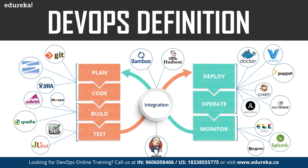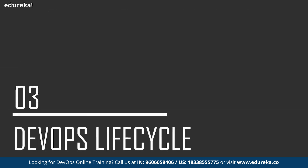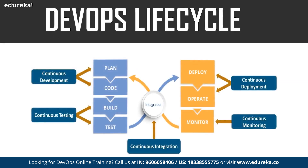As you can see in this diagram, these are the various tools that are used in DevOps. Now let us have a look at the DevOps lifecycle. As you can see in this diagram, these are the various phases of the DevOps lifecycle: continuous development, continuous testing, continuous integration, continuous deployment, and continuous monitoring. Now let us have a look at each of these phases one by one.